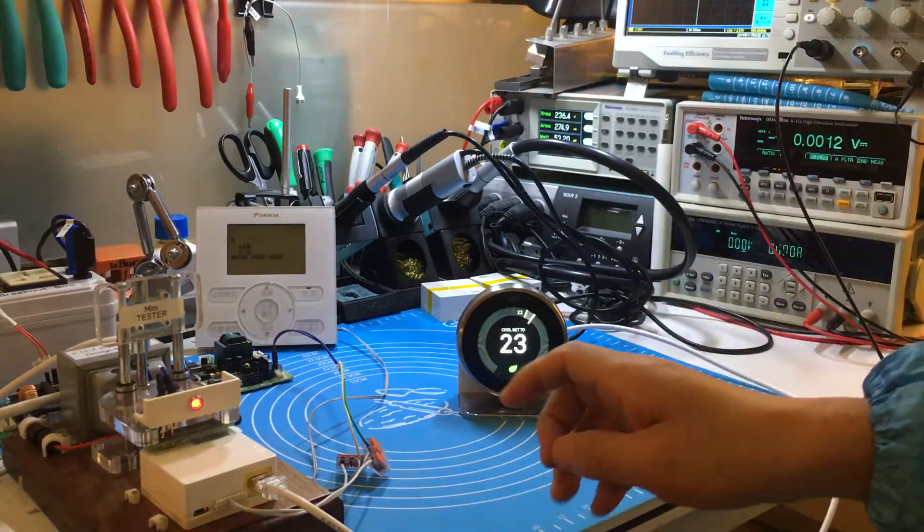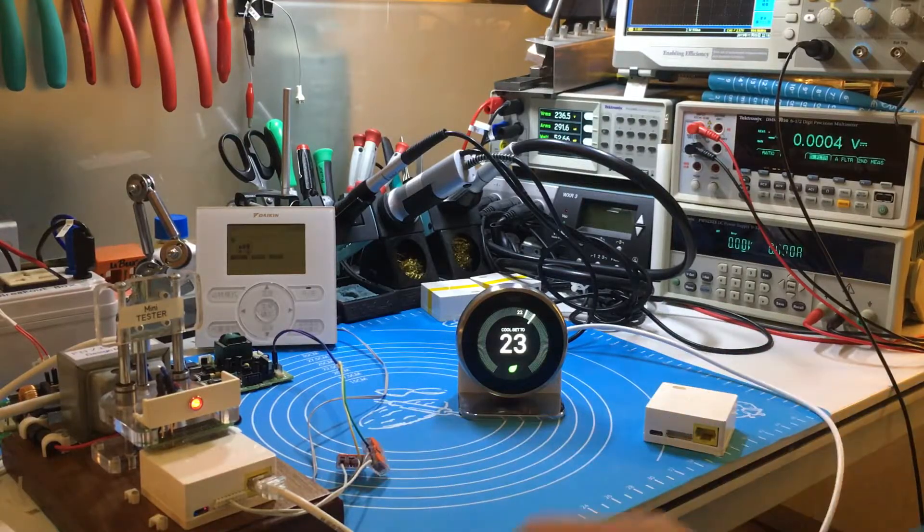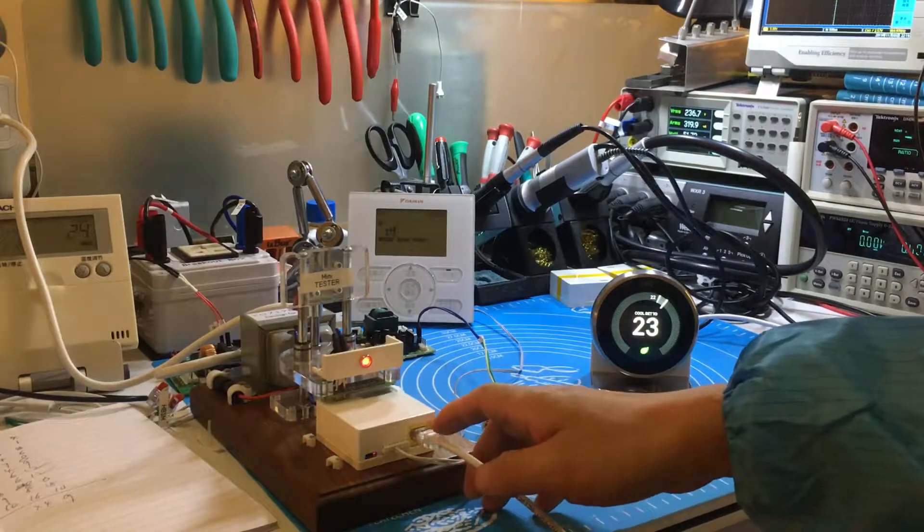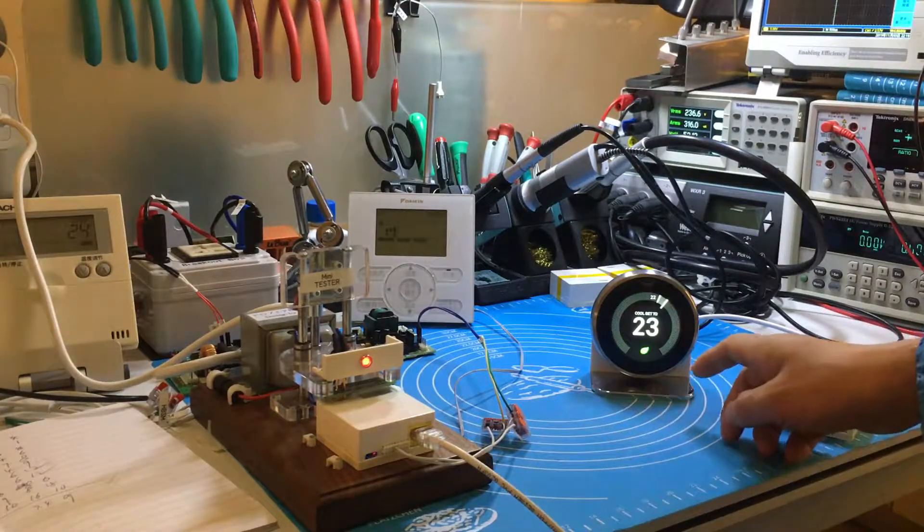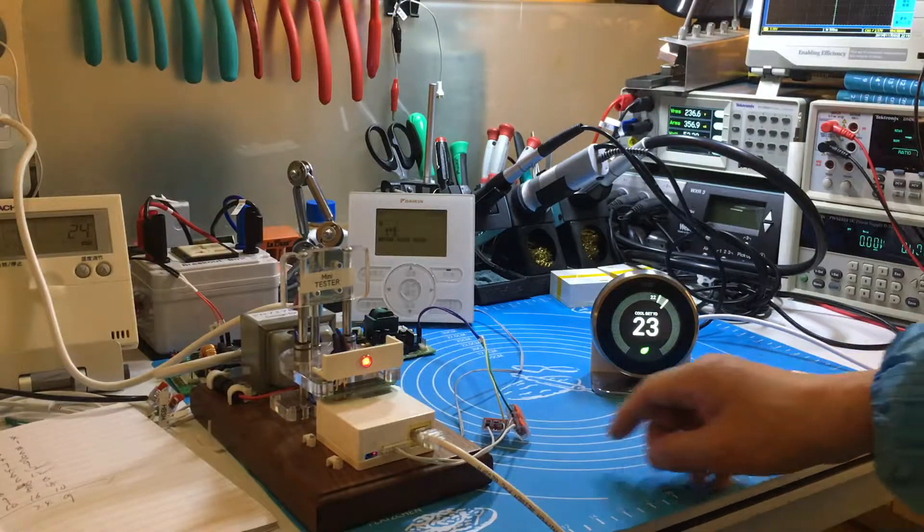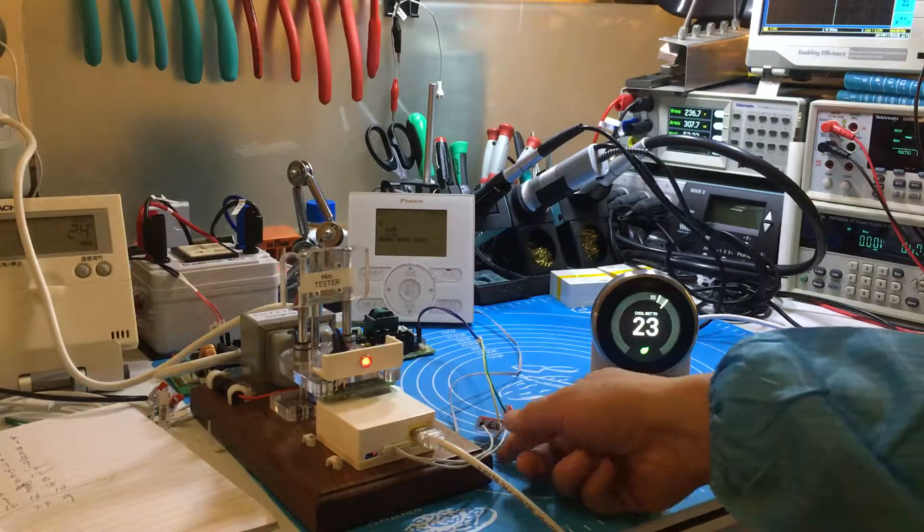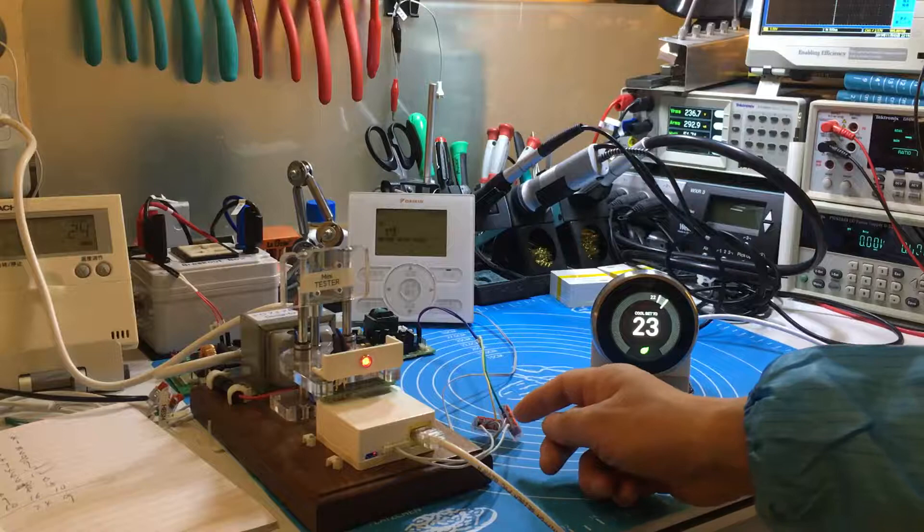The adapter has one RJ45 connector. The connector, through the cable, connects with the Nest thermostat. This cable connects with the Daikin air conditioning system through the two-wire control lines.